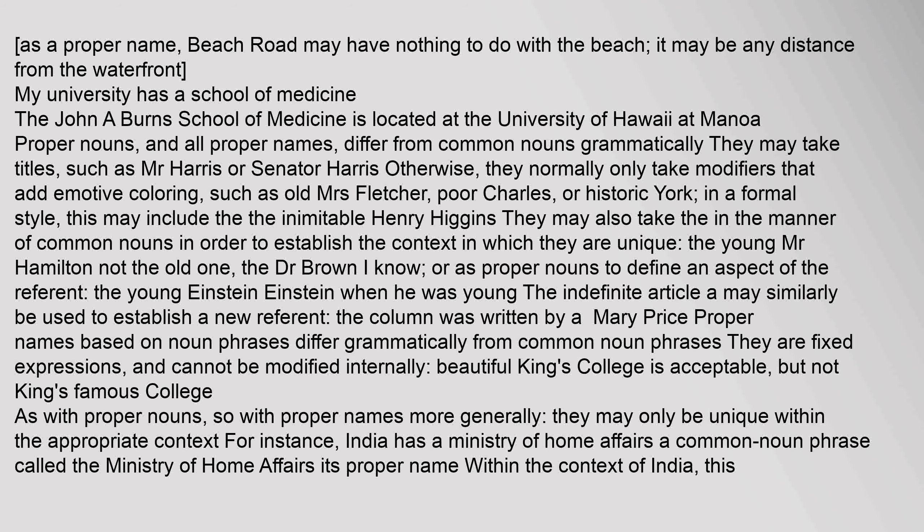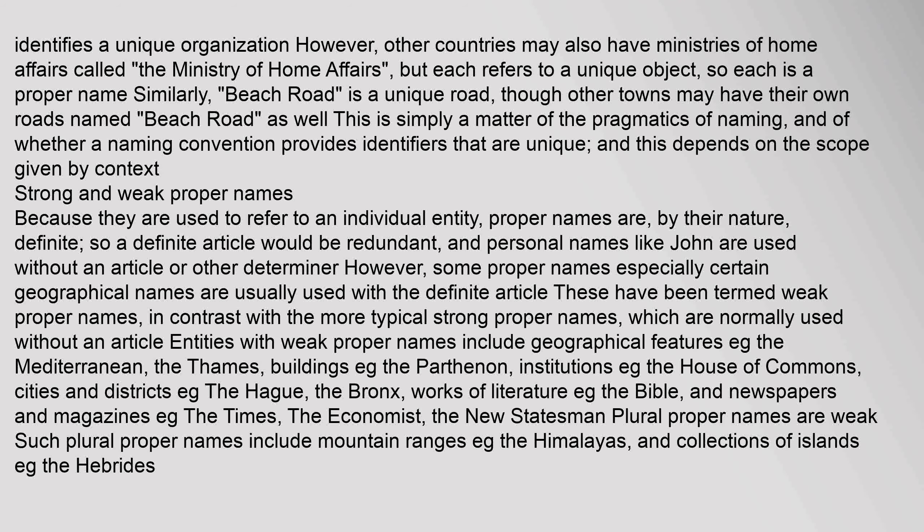With proper nouns and proper names more generally, they may only be unique within the appropriate context. For instance, India has a Ministry of Home Affairs — a common noun phrase — called the Ministry of Home Affairs, which is its proper name within the context of India. However, other countries may also have Ministries of Home Affairs called the Ministry of Home Affairs, but each refers to a unique object, so each is a proper name. Similarly, Beach Road is a unique road, though other towns may have their own roads named Beach Road. This is a matter of the pragmatics of naming and of whether a naming convention provides identifiers that are unique within a given context.